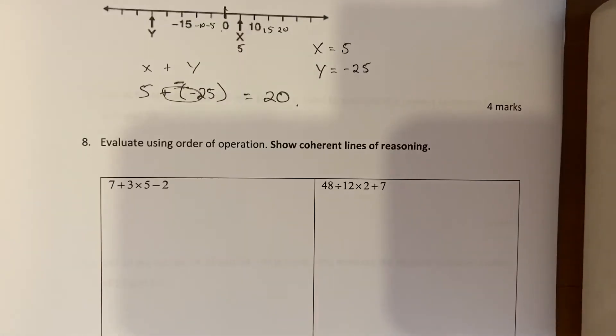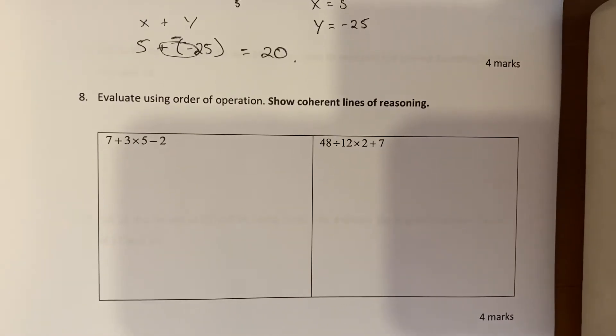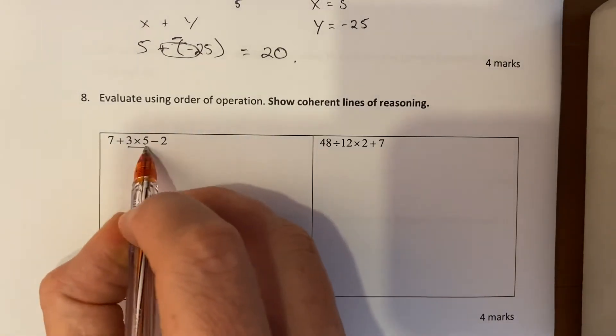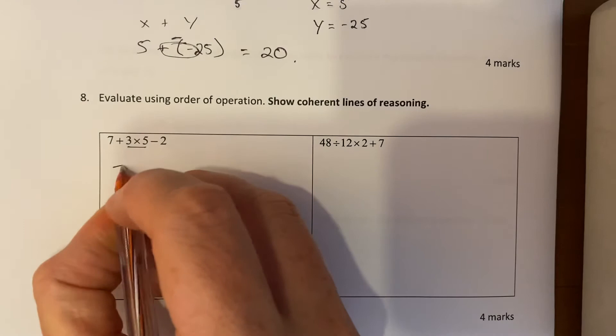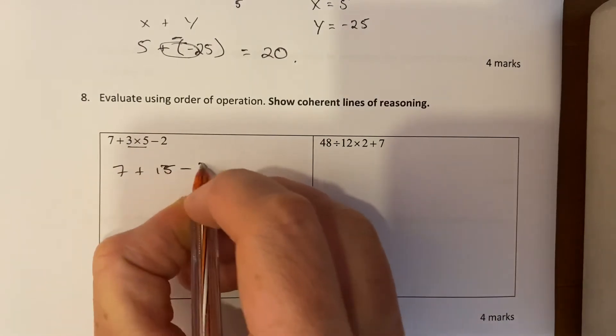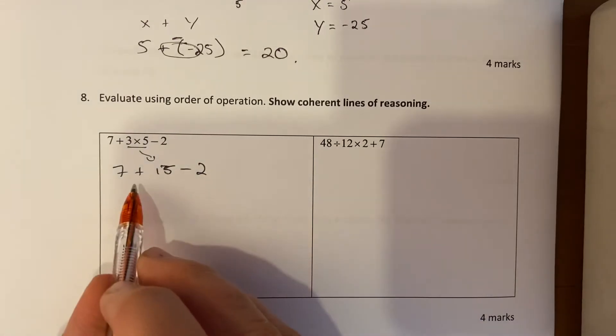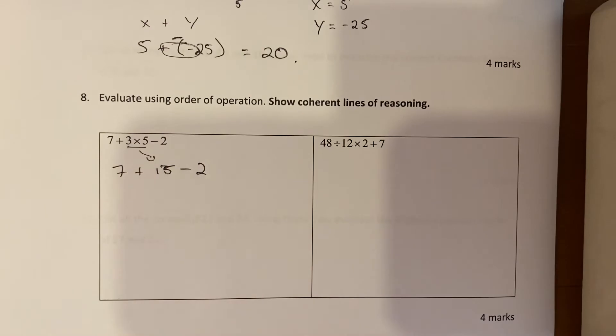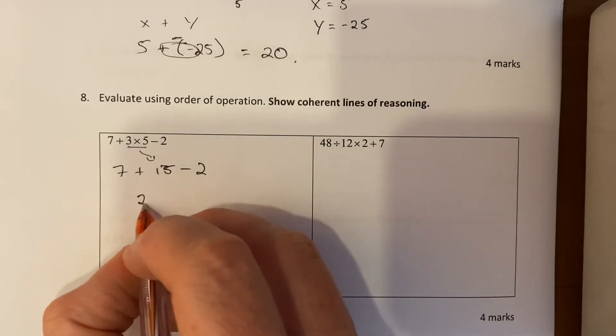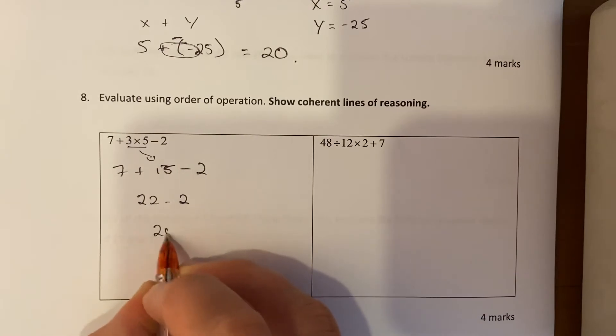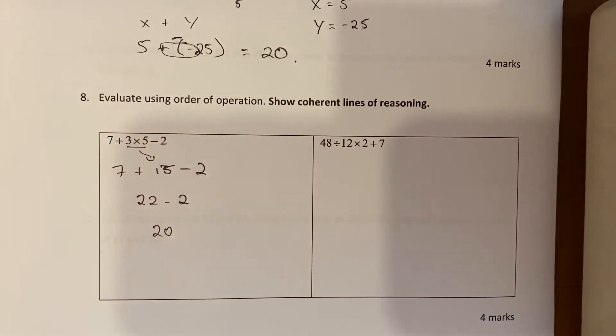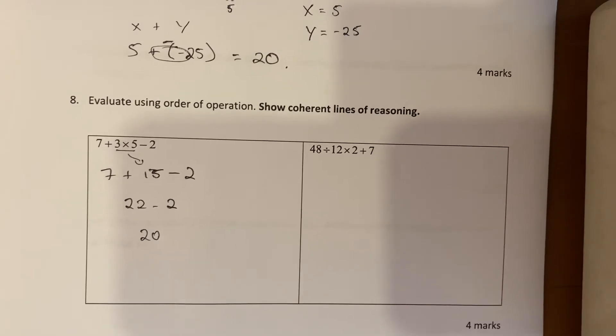Tricky one - order of operations, so BEDMAS. Might need to review that if you're not sure about this. Multiplication would come first in this one before any addition and subtraction, and I'd write it down like this: 3 times 5 is 15. Then I would do - we've got addition and subtraction, they have the same power, so I do whichever comes first from left to right. So 7 plus 15 is 22, take away 2, and I write my final answer here. See where I'm writing it underneath each other - that's a nice way to lay out these order of operations questions.